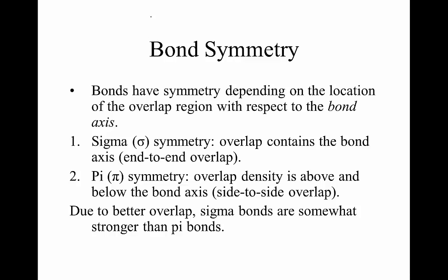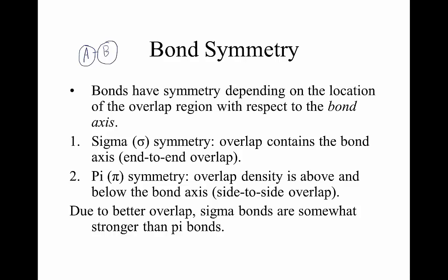What does that mean? Let's imagine that we have two atoms that are bonded together. Here's atom A bonded to atom B. In the center of atom A is the nucleus for atom A, and in the center of atom B there's the nucleus for atom B. The line that connects the nuclei of the atoms — the dashed line that runs through both nuclei — is what we call the bond axis. That's the line that connects the atoms.